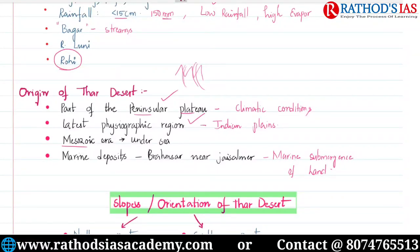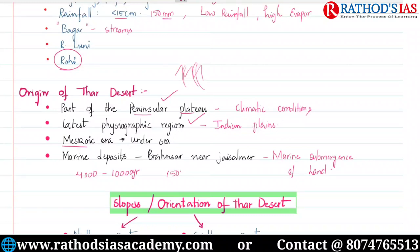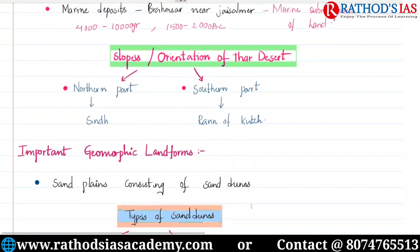The exact date of origin of the Thar desert is a controversial topic. Some consider it approximately 4,000 to 10,000 years old, while others say it was mainly formed around 1,500 to 2,000 BC. So the exact time of formation of the Thar desert remains controversial.